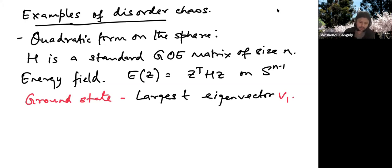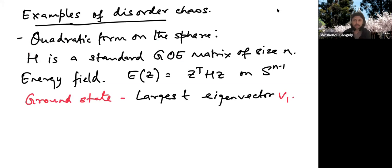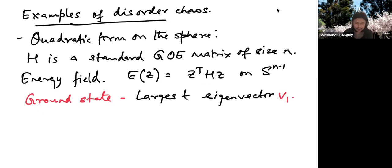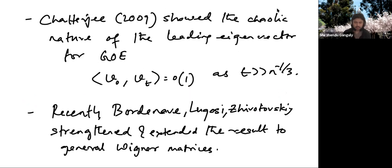You have the sphere in N dimensions. Let H be a standard GUE matrix of size N — symmetric, all entries are standard Gaussians up to symmetry. Define an energy field on the sphere by taking the quadratic form: energy at point z on the sphere is z^T H z. The ground state — the z that maximizes this — is going to be the largest eigenvector, because the largest eigenvector V_1 is the one that actually maximizes this quadratic form.